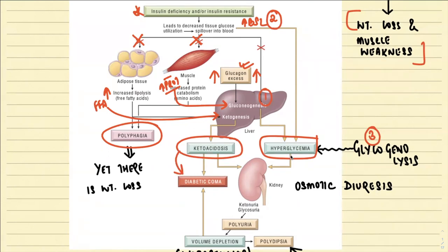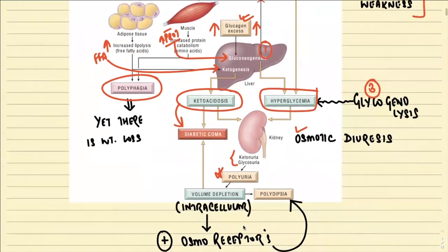Hyperglycemia means excessive glucose enters the kidney. As glucose is osmotic, it carries water along with it, causing osmotic diuresis. There will be ketonuria along with glycosuria. Excessive glucose and water are lost, leading to polyuria. This polyuria leads to intracellular volume depletion, which stimulates osmoreceptors in the hypothalamus, leading to polydipsia.